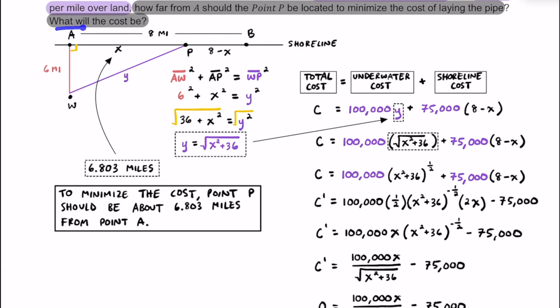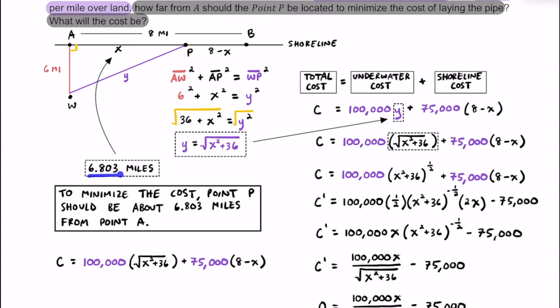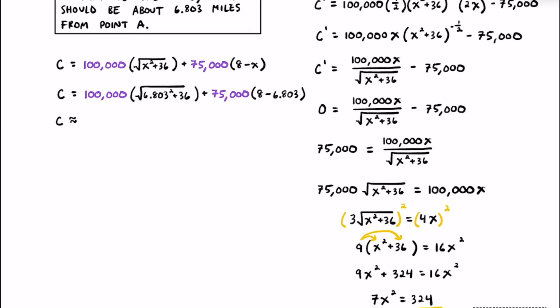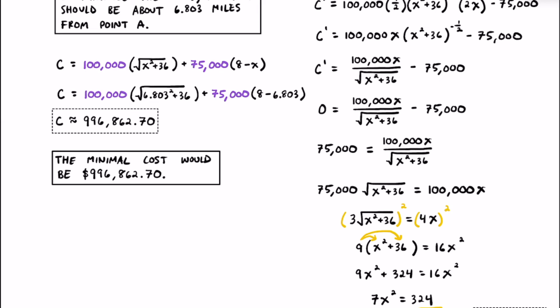To find the actual minimum cost, we substitute X ≈ 6.803 into the cost equation C = 100,000·√(X² + 36) + 75,000·(8 − X). Plugging this into a calculator gives a total minimum cost of approximately $996,862.70. That's the minimal total cost for the pipeline both underwater and along the shoreline, and that wraps up this optimization problem. If you found the video helpful, please give it a thumbs up and share it — keep up the great work, and I'll see you in the next one.